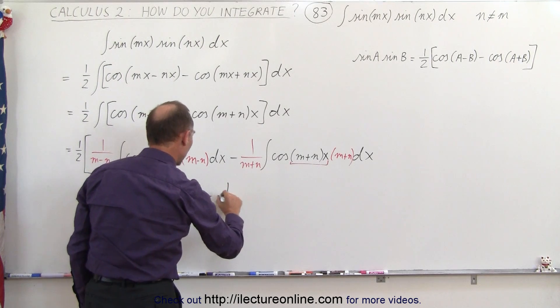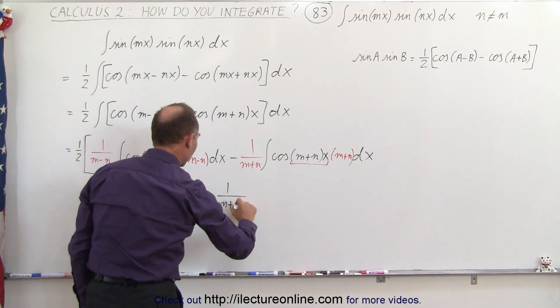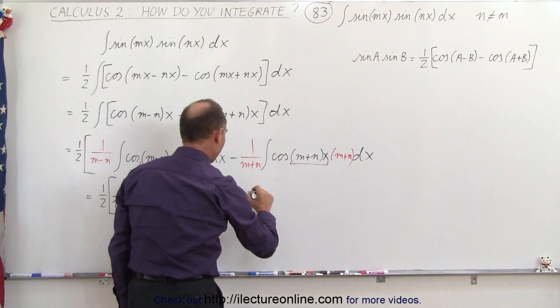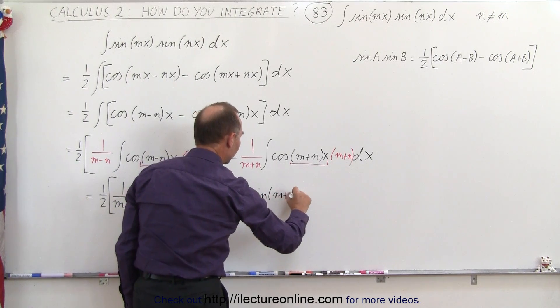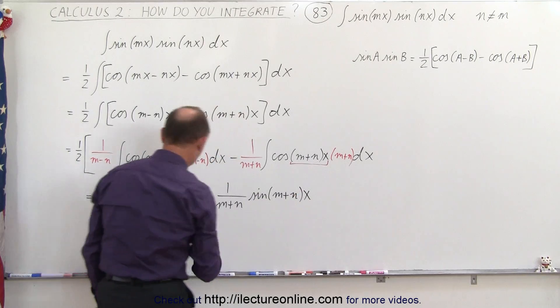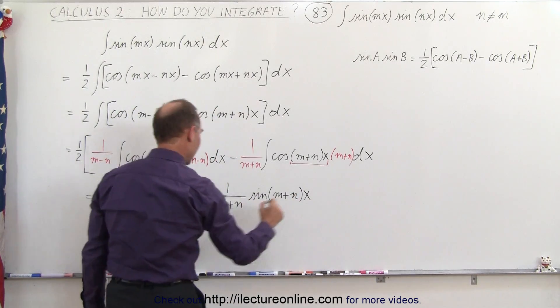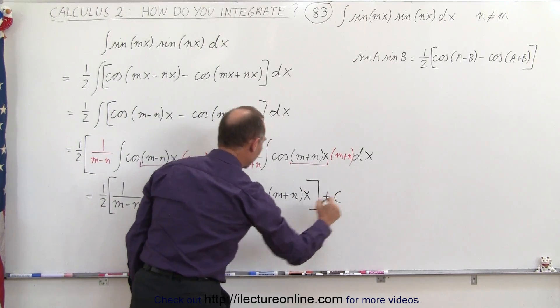And then here we have minus one over m plus n. And then here we have the integral again that will become the sine of m plus n times x. Make sure I don't forget the x's. And we have a constant of integration.